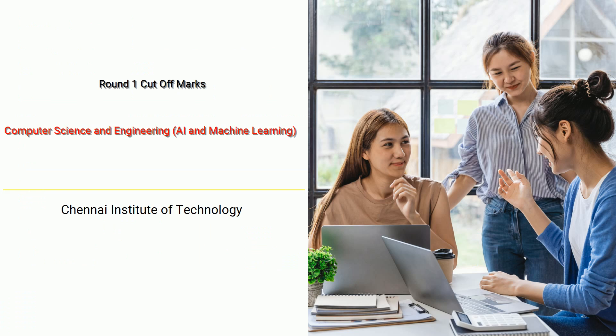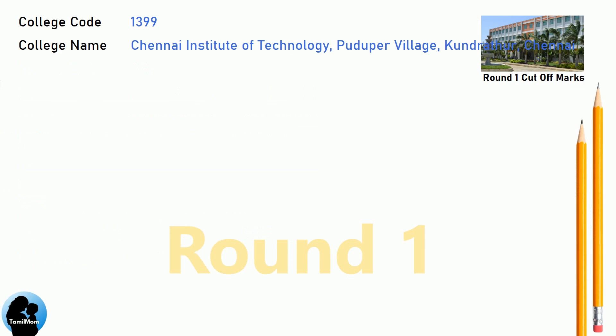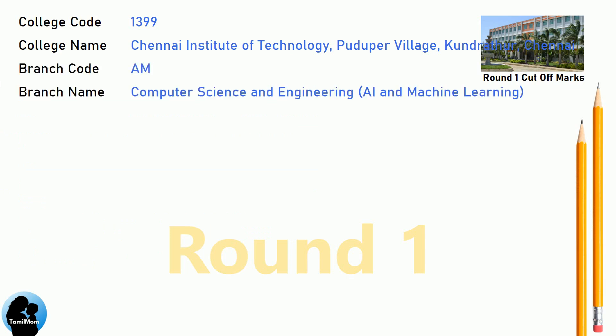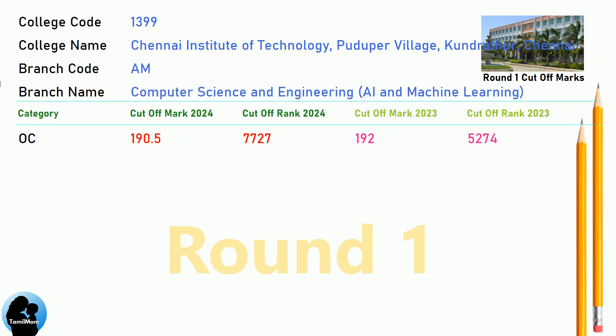DNA Round 1 Cut-off and Round 2 Cut-off for Chennai Institute of Technology in Computer Science and Engineering, AI and Machine Learning.